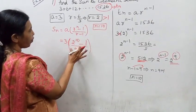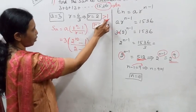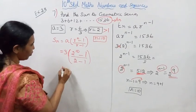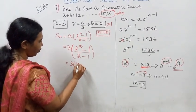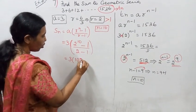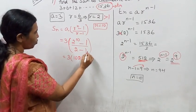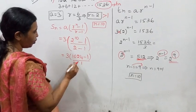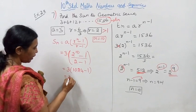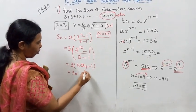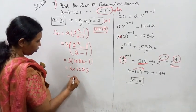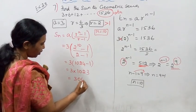Now putting n equals 10 into the formula — r is greater than 1: Sn equals a times (r^n minus 1) divided by (r minus 1) equals 3 times (2^10 minus 1) divided by (2 minus 1). That is 3 times (1024 minus 1) divided by 1, which equals 3 times 1023, giving 3069.